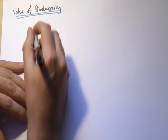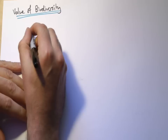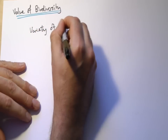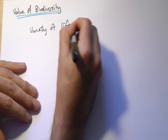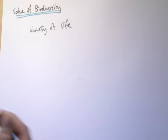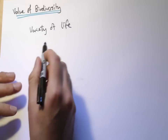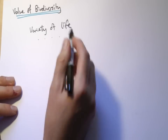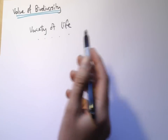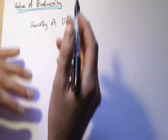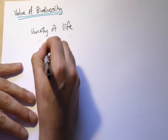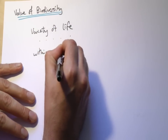It's all to do with biodiversity, which means really the variety of life. You can talk about biodiversity in terms of how many different species you have — how many different tigers, lions, panthers, leopards, whatever it may be — but you can also have biodiversity within a species.